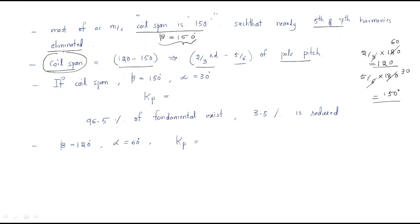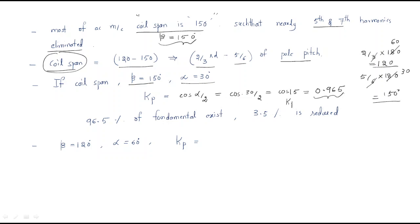If coil span is beta, then the pitch factor kp is given by the formula kp = cos(alpha/2). With alpha equal to 30 degrees, kp = cos(30/2) = cos(15°). The value of cos(15°) is 0.965, so kp equals 0.965.